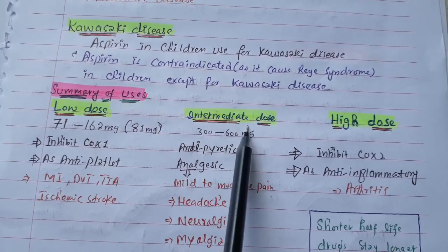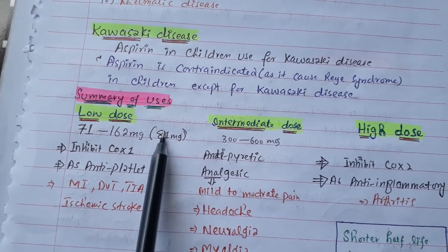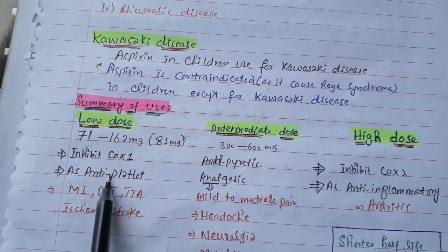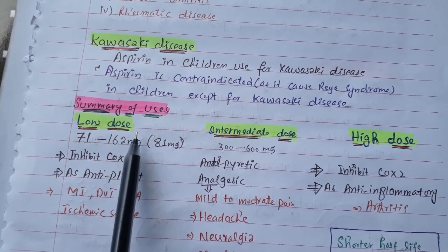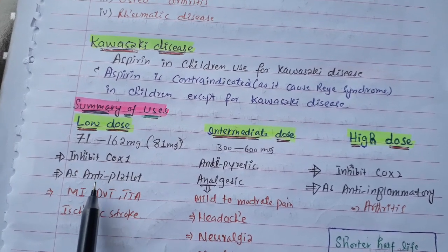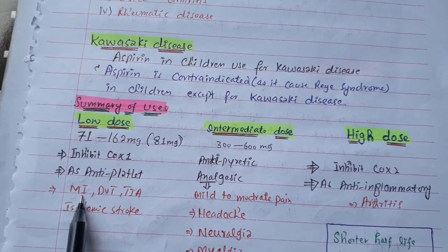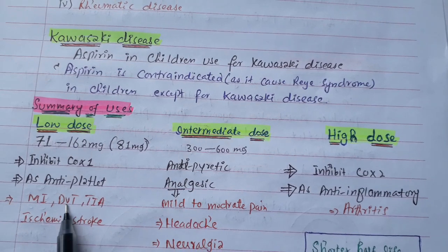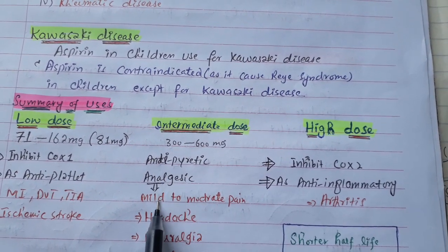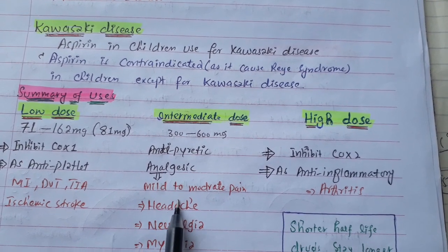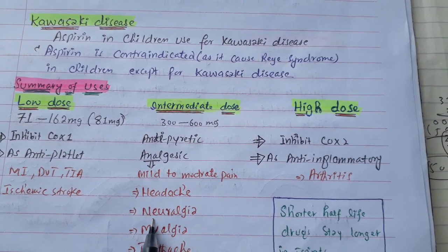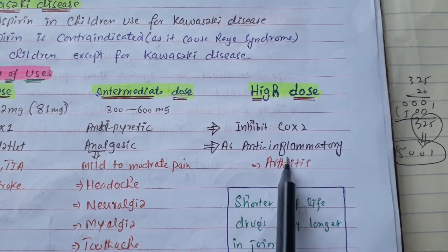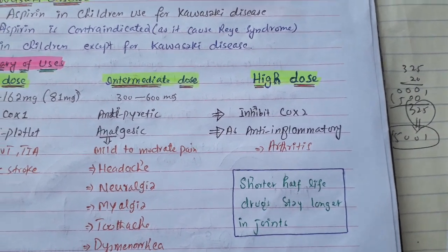Summary of uses: Low dose (most commonly 81 mg) inhibits COX-1 and is used as an antiplatelet — in myocardial infarction, deep venous thrombosis, transient ischemic attack, ischemic stroke, and heart surgeries. Intermediate doses are used as antipyretic to decrease fever and as analgesic for mild to moderate pain such as headache, neuralgia, myalgia, toothache, and dysmenorrhea. High doses inhibit COX-2 and act as anti-inflammatory, used in arthritis.